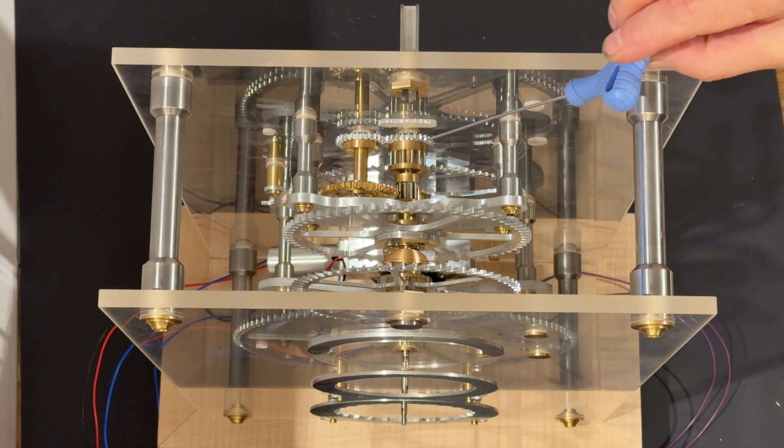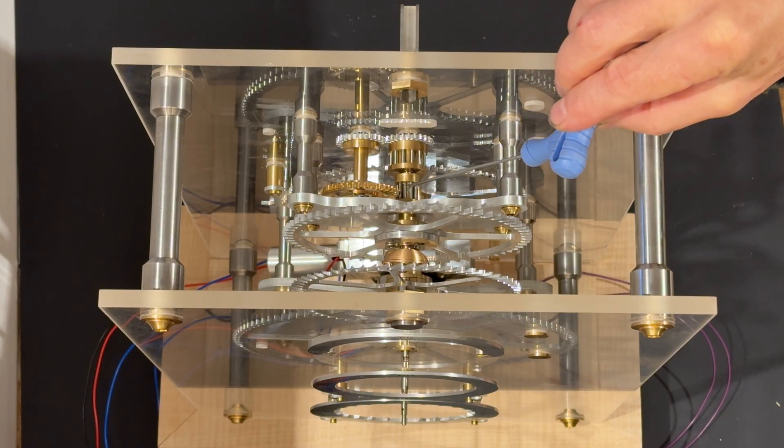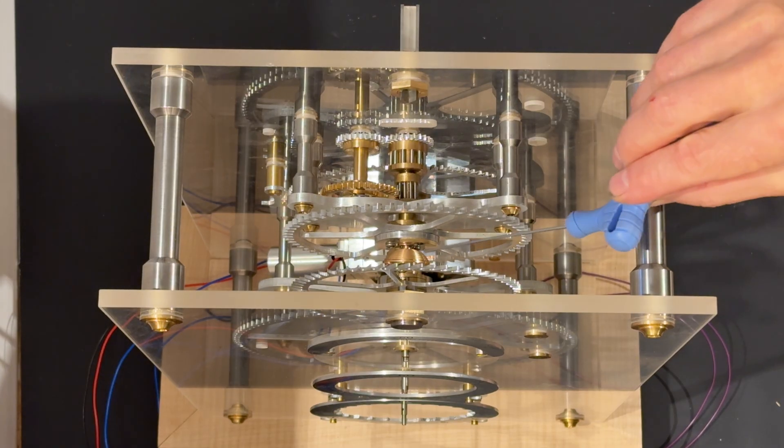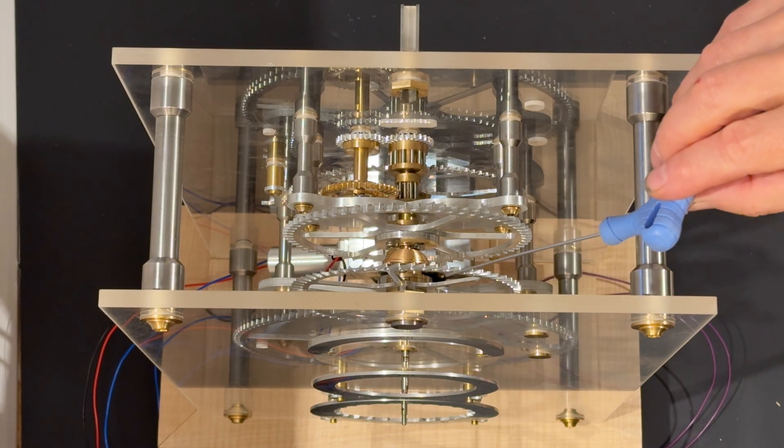And there's an out and back gear reduction to another lantern pinion which drives the remontoir wheel which winds the spring of the remontoir which powers the escape wheel.